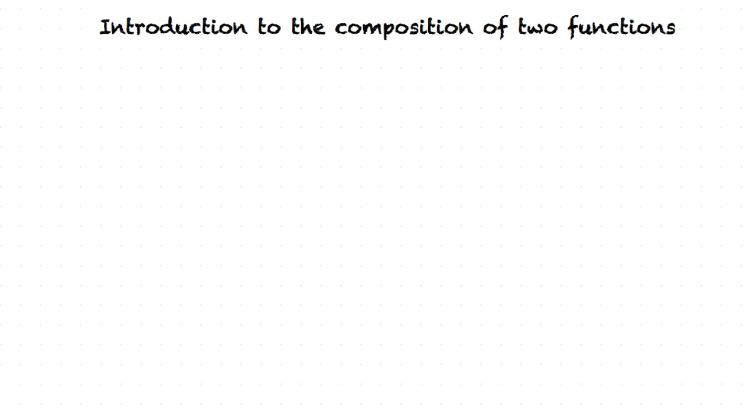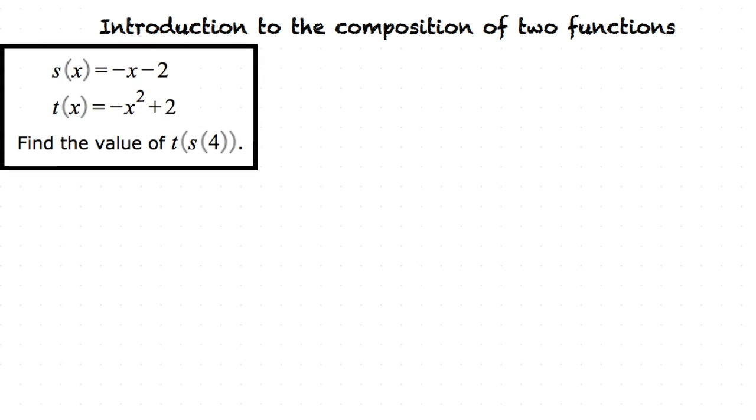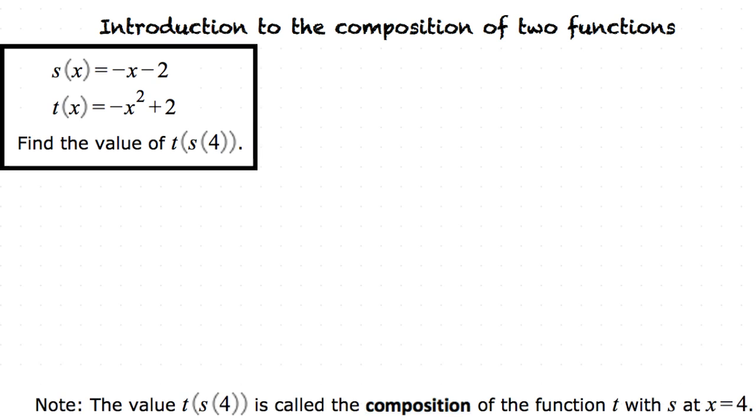I'll run through an example to give a better understanding. Let's do the following example. So we have s(x) = -x - 2, and t(x) = -x² + 2. Now we're looking to find the value of t(s(4)). Note the value t(s(4)) is called the composition of the function t with s at x = 4.